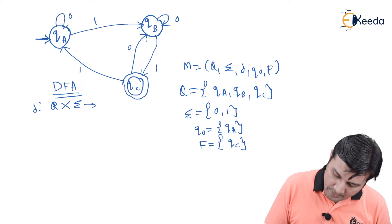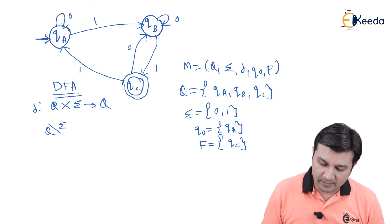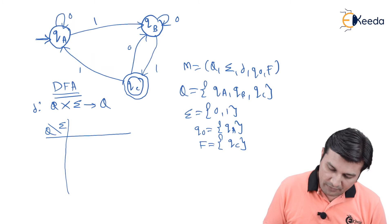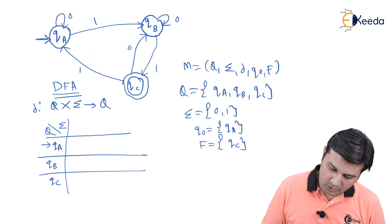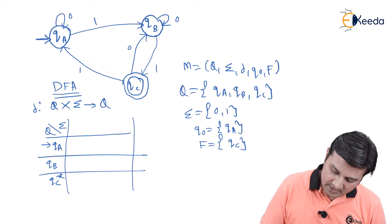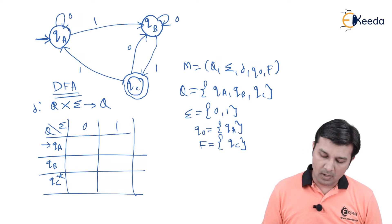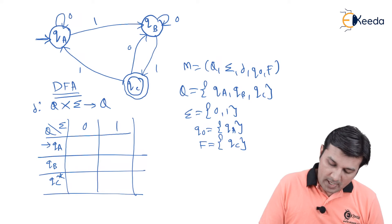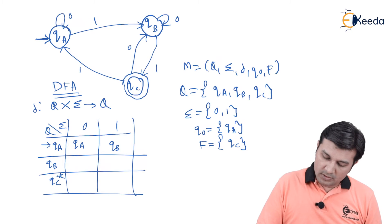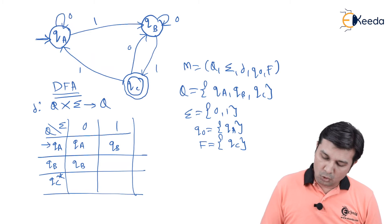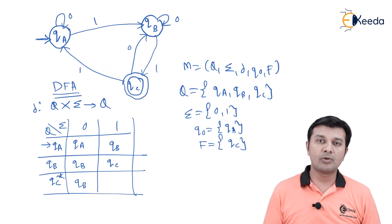Now for the transition function δ: given a state and an input symbol, what is the next state? I draw a table of Q × Σ. The states are QA, QB, and QC (marked with * as the final state). For inputs 0 and 1: QA on 0 → QA, QA on 1 → QB; QB on 0 → QB, QB on 1 → QC; QC on 0 → QB, QC on 1 → QA. That completes the transition table.